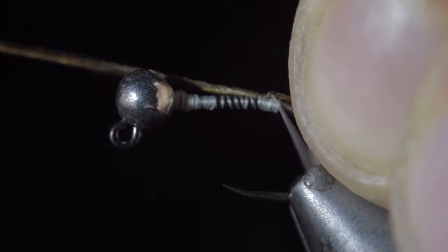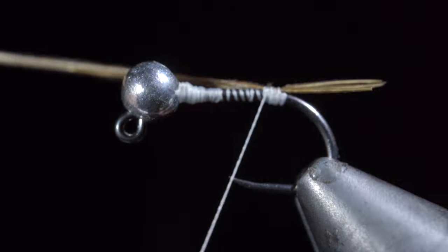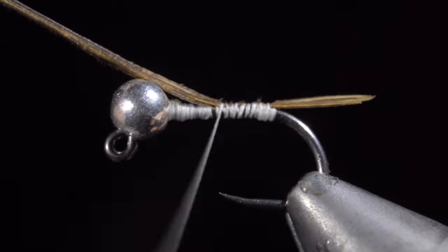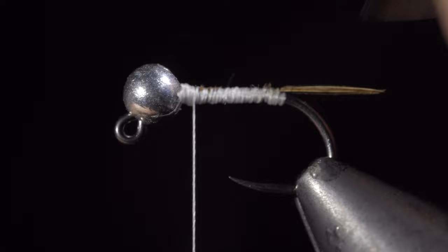We'll secure that to the back of the fly and the small thread base allows the pheasant tail to splay out. We will then further secure the pheasant tail to the hook shank and pull the excess free.